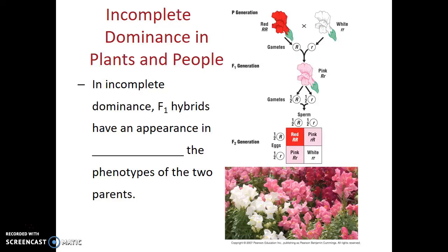In incomplete dominance, the F1 hybrids — the heterozygotes — have an appearance in between that of the phenotypes of the two parents. An example here are snapdragons. You can have true breeding red snapdragons and true breeding white snapdragons, but when you cross them together, their offspring are always pink. The pink snapdragons can never be true breeding — you only get pink snapdragons by having one red allele and one white allele. So if you were to breed two pink snapdragons together, a quarter of the offspring would be red, half would be pink, and a quarter would be white.